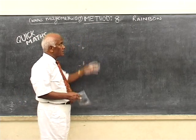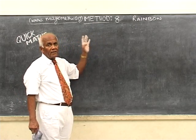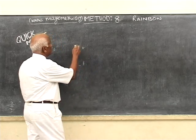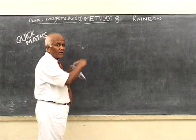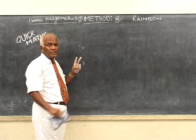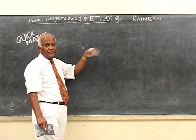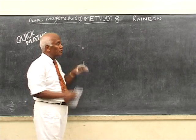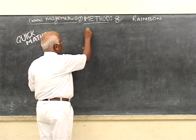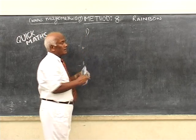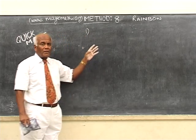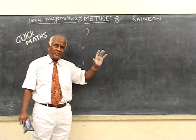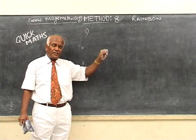This is the most useful method because with it we can multiply any number — not just two digits, but any number of digits by two digits — which is very useful. So the rainbow method is to multiply any number of digits by two digits.